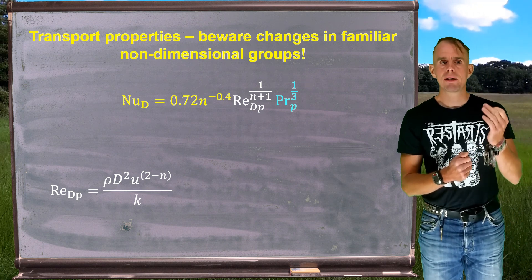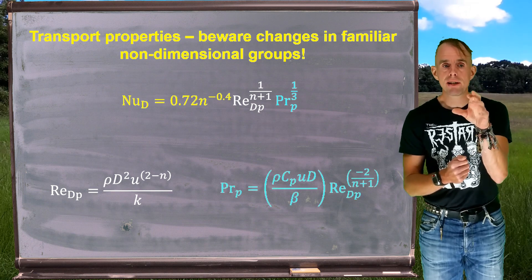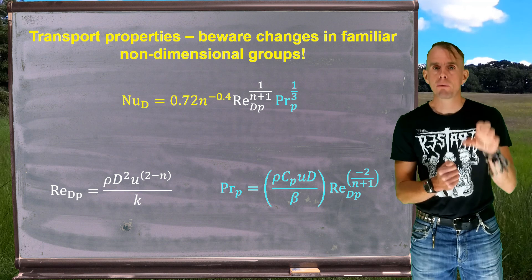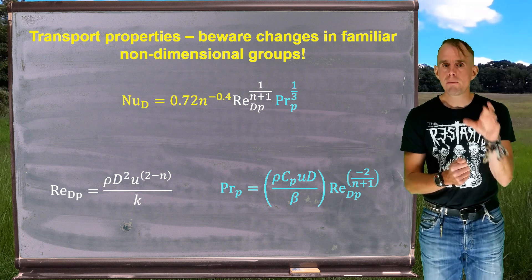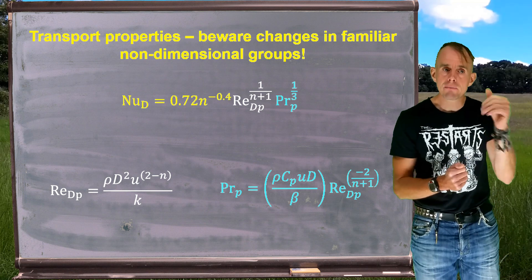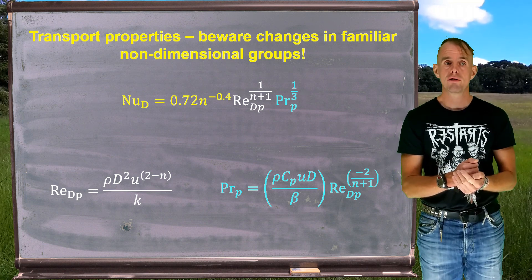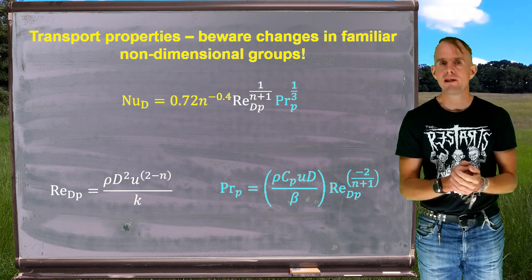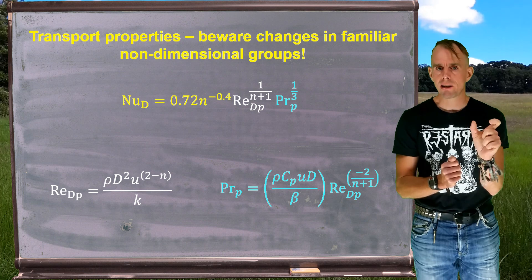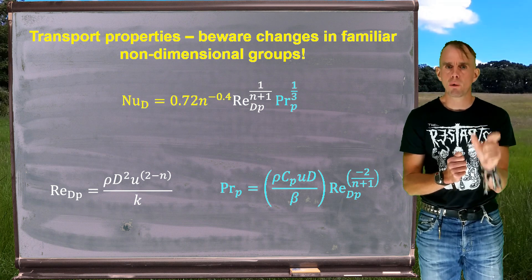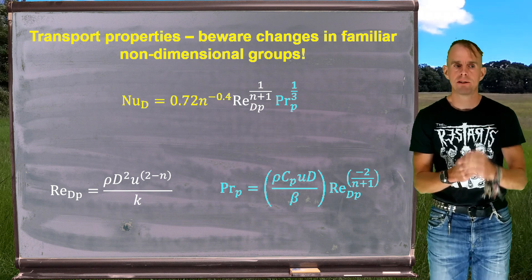So key point here is heat and mass transfer correlations do exist for generalized Newtonian flows. They do change from their Newtonian counterparts. And they will be specific to the generalized Newtonian constitutive law that you're using. So extra care required.